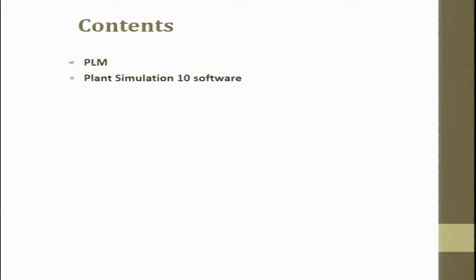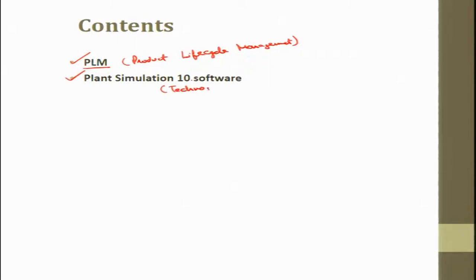The contents of this lecture are as follows. First I will discuss what is PLM — Product Life Cycle Management. Then I will go to Plant Simulation software, which is Plant Simulation 10, that is Tecnomatix. We will also discuss Arena, which is similar, but the PLM software we have at IIT Kanpur is the Siemens PLM version, which is a very advanced version.